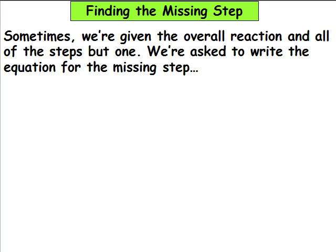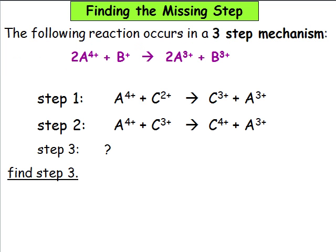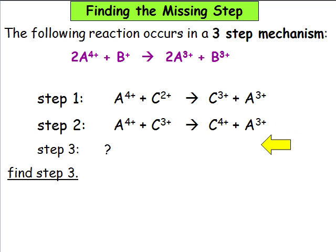Sometimes we are given the overall reaction and all of the steps but one, and we are asked to write the equation for the missing step. Here is an example. The overall reaction is shown here, step 1 is shown here, and step 2 is shown here. We are asked to write the equation for step 3.